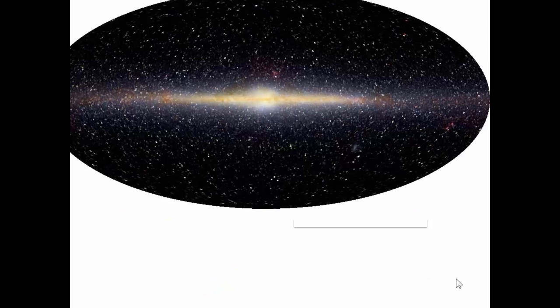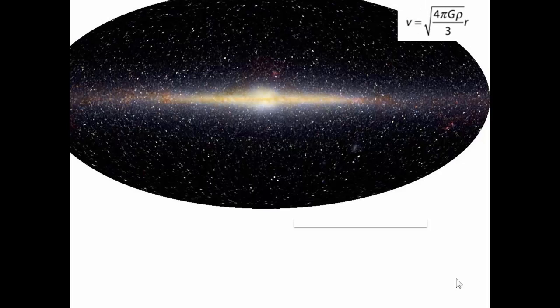Let's look at the entire galaxy. We've looked at this v equals the root of 4πGρ/3 times r, the velocity is proportional to the radius but this is only in the center part when we have a uniform density. So it only works for this center part there.